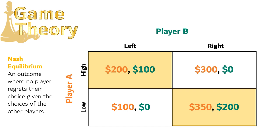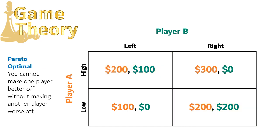You can have more than one Nash Equilibrium in a game, so when looking for them, you always need to check every outcome. We noted that the outcome in the Prisoner's Dilemma is not the best outcome for both prisoners. To get a grasp on that, we can apply the concept of Pareto optimality, named after the economist Vilfredo Pareto. An outcome is Pareto optimal when you cannot make one player better off without making another player worse off.